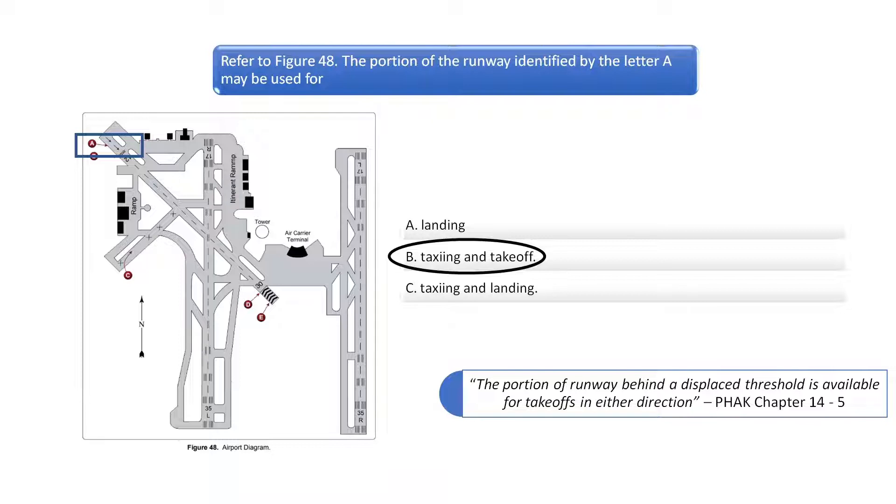The best answer for Question 1 is B, since the portion of the runway in Section A may only be used for taxiing and takeoff in the direction that the arrows are pointing.